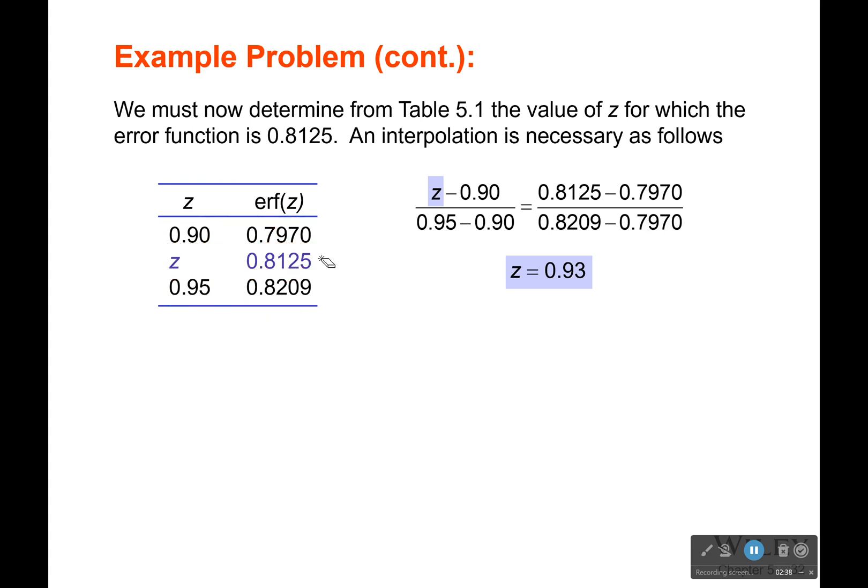This is going to happen almost every single time you do a problem with the error function. You're going to have to learn to interpolate. It's kind of like the slope. What you say is there is a linear slope between this point and this point. By understanding that you can figure out what the value of z would be for this particular point. If you're not sure how to write this out, it's what you want minus the bottom over the top minus the bottom, and that's equal to what you got minus the bottom over the top minus the bottom. Be very careful when you plug this in your calculator that you put parentheses around these before you divide. Otherwise, you're going to have a bad time. If you do that correctly, you'll get that z is equal to 0.93.